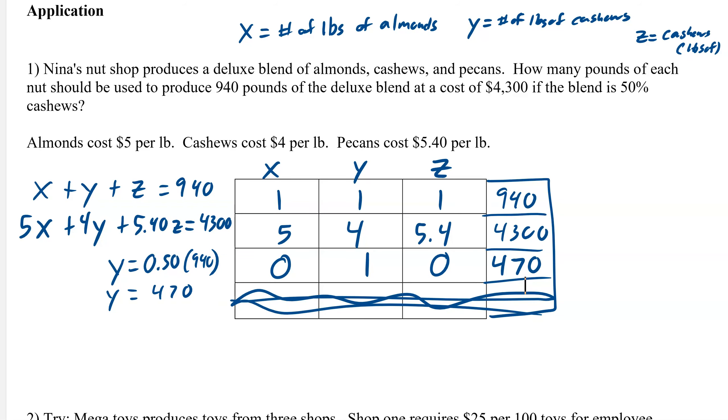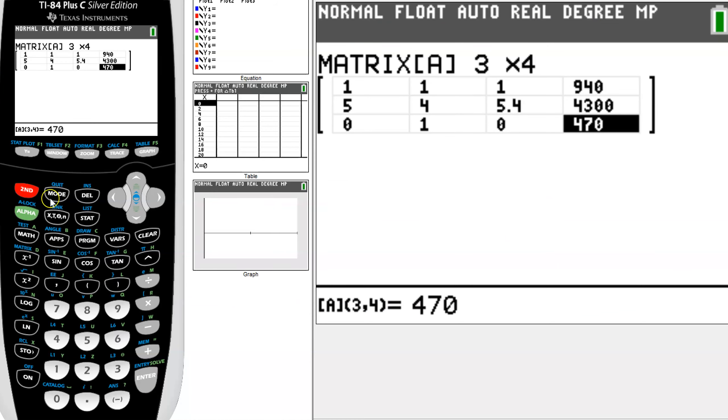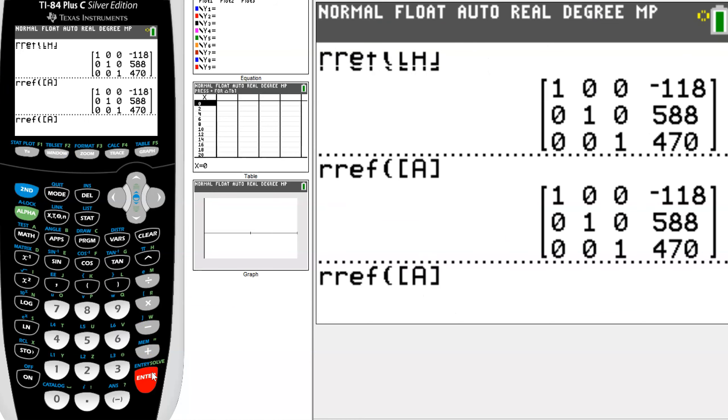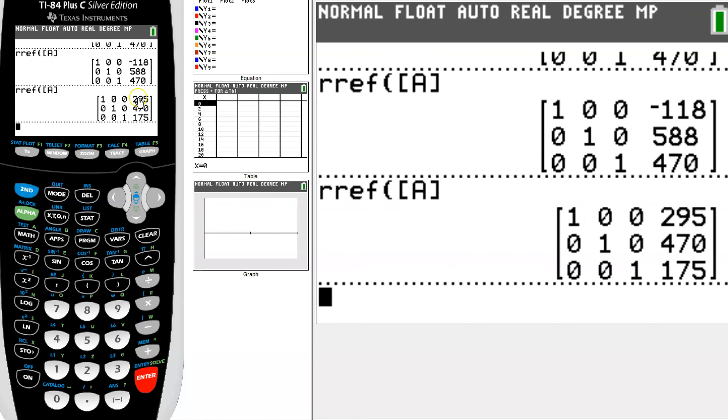Now we just have to plug this in our calculator. I've got it all plugged in, so I can quit, hit enter. And we get 295, 470, and 175. You can see I made a mistake by plugging it in. The nice thing about mistakes is it's negative here. That's not possible. You can't owe nuts to a mixture. So 295, 470, and 175. Mistakes are normal, they happen, and they help us learn.